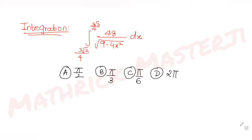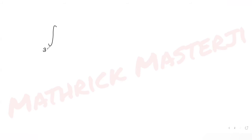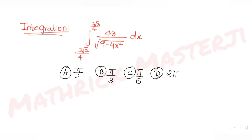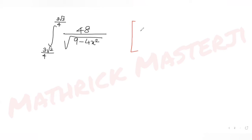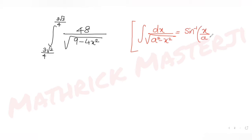So I have an integral with limits 3√2/4 and 3√3/4, and the integrand is 48 over √(9 − 4x²). The general formula we need here is: ∫dx/√(a² − x²) = sin⁻¹(x/a) + c.